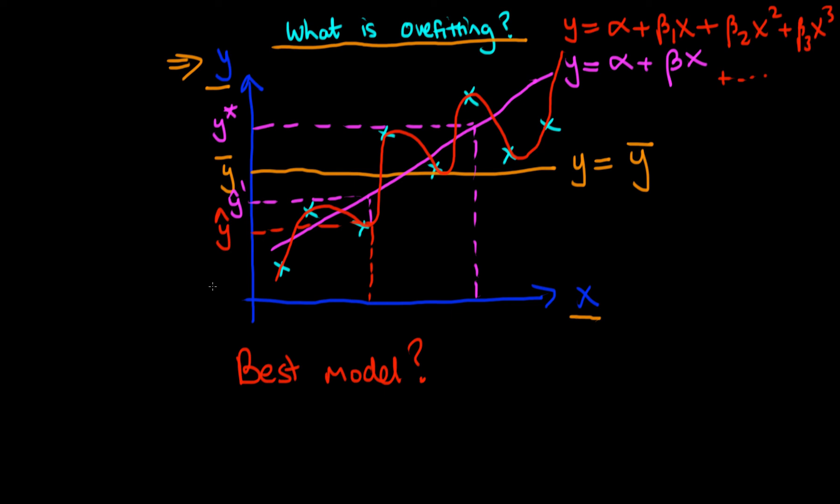The pink line is more robust to the sort of sampling noise that we have in our data. And I think that in this case we would prefer the pink line to the more simple model where we just predict the sample mean each time, because it does look like there is some sort of linear relationship between x and y here.